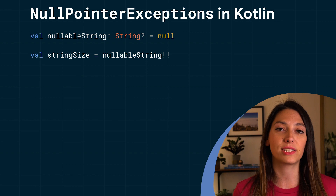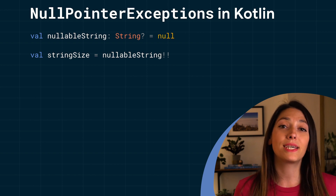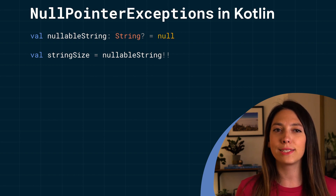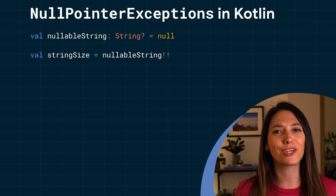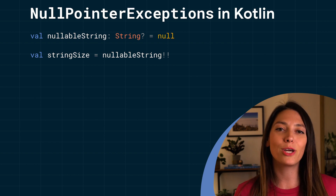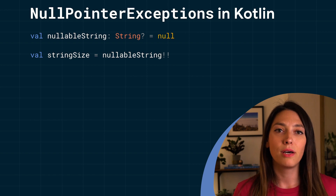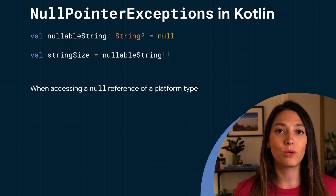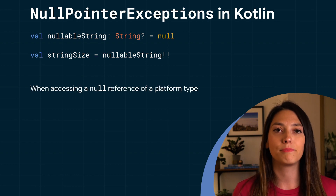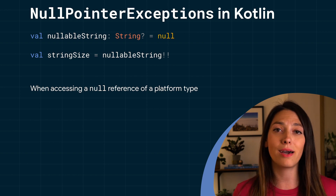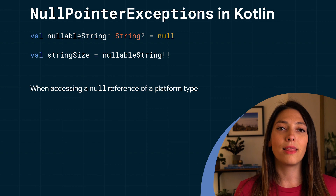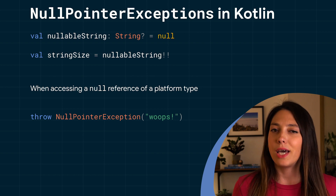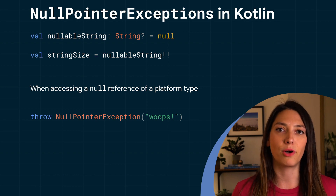You can still get null pointer exceptions in Kotlin. If you know that something is never going to be null, you can use the null assertion operator — the double exclamation mark, also known as the bang bang operator — because you can shoot yourself in the foot with it. This operator converts any value to a non-null type, throwing a null pointer exception if the value is null. You can also get a null pointer exception when accessing a null reference of a platform type — for example, accessing an object coming from a Java API that's not annotated with nullable. And lastly, you get a null pointer exception if you're explicitly throwing one.